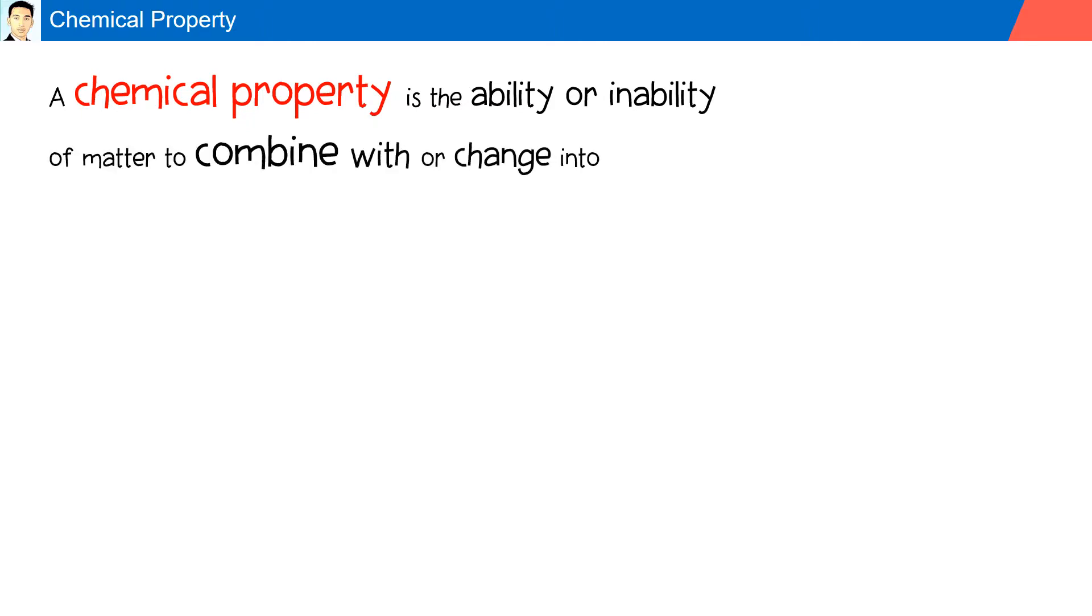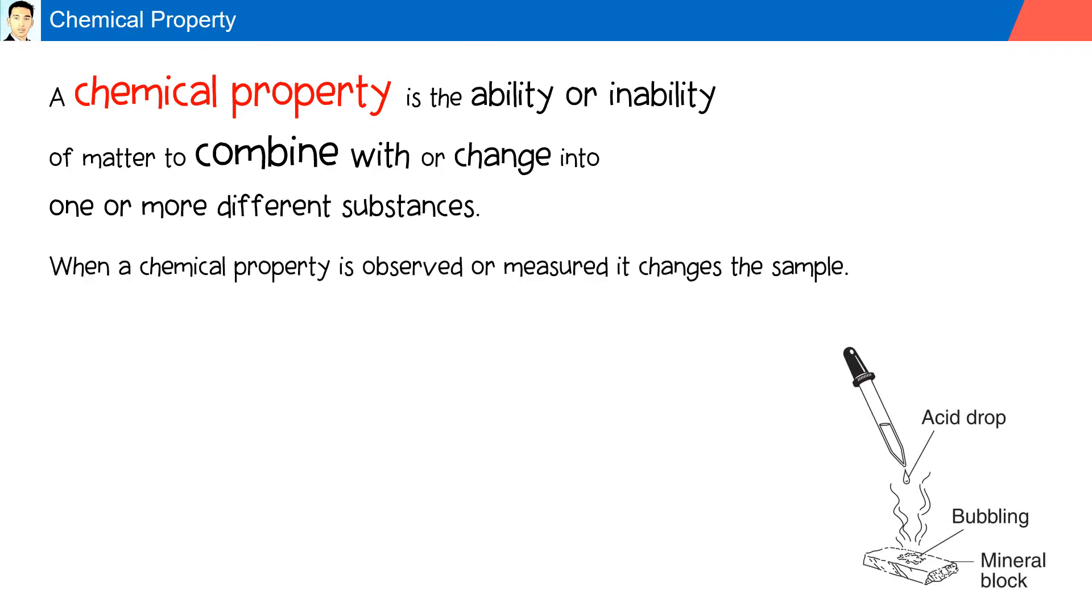Chemical property. A chemical property is the ability or inability of matter to combine with or change into one or more different substances. When a chemical property is observed or measured, it changes the sample. Examples include reactivity with air, acid, base, water, and other chemicals.